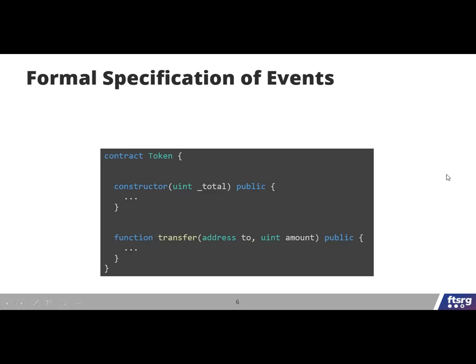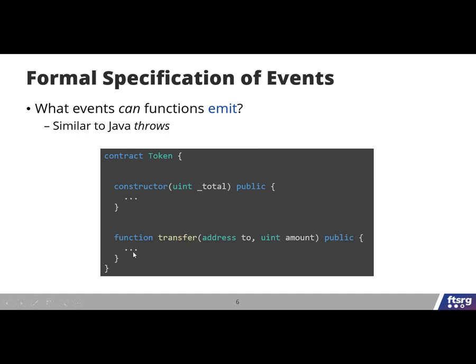These annotations are provided as special comments with the notice 'tracks changes in' syntax. Functions can also be specified with the events they are allowed to emit — this is similar to declaring potential exceptions in Java. For example, the constructor is allowed to emit initialized, and the transfer function is allowed to emit transferred. Again, these are provided as special annotations written above the functions.